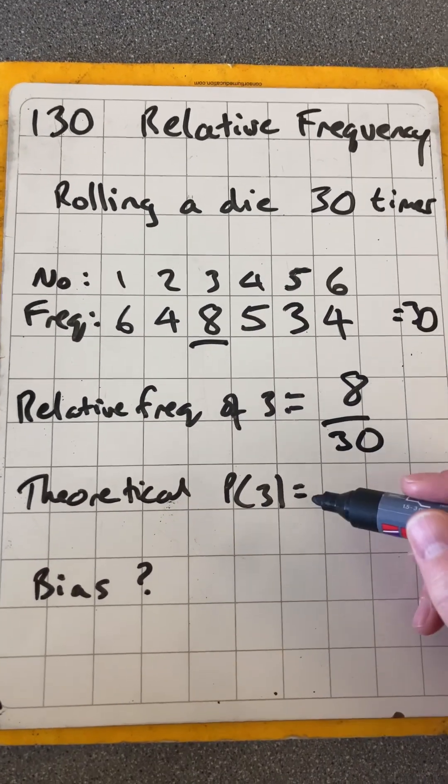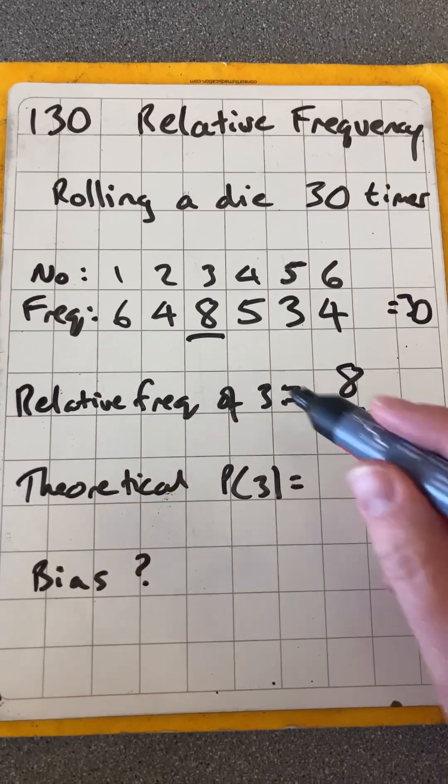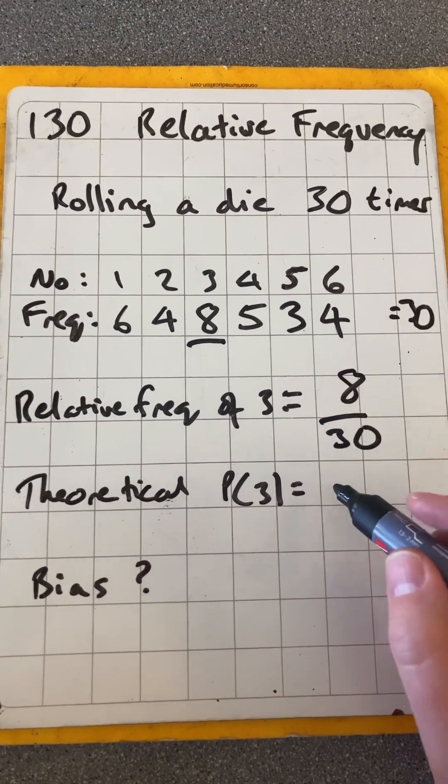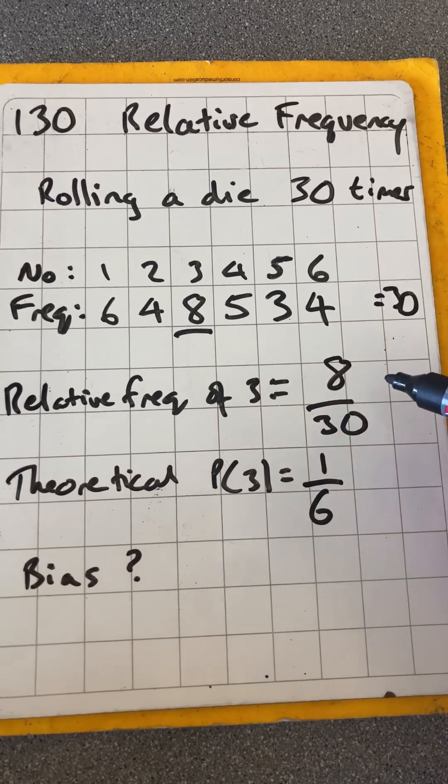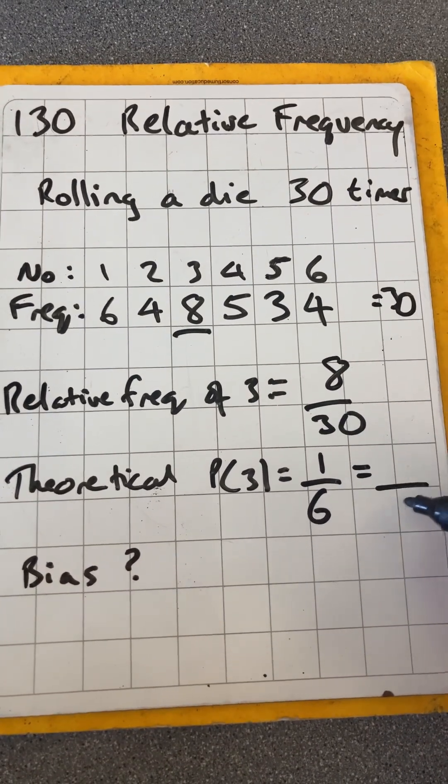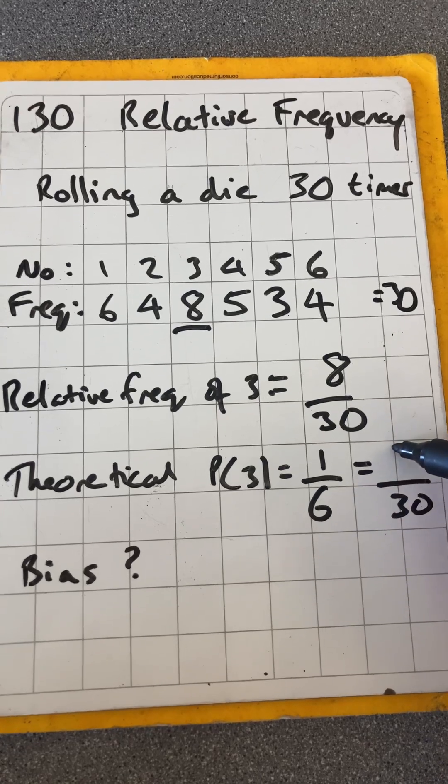Let's compare that to the theoretical probability. We know that if it is a fair die, the theoretical probability of getting any number will be 1/6. So if I was to get the equivalent fraction out of 30, I would expect to get 5.